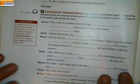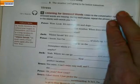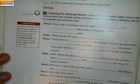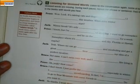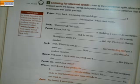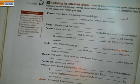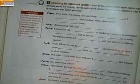This is very important for when you're tested — to choose the word from what you hear. So now, if you have the text, you can be filling it in; if you don't, you can follow along and check. Let's do the first part of the cloze. Peter: 'Wow, it's raining cats and dogs again. I hate this weather. When does winter break start?' Jack: 'Winter break? It's only October.' Peter: 'I know, but I'm sick of studying. I want to go someplace warm and lie on the beach for a week — someplace sunny and dry. Florida or Hawaii, maybe.' Jack: 'Yeah, where we can go swimming and snorkeling and get a great tan. That's my idea of a perfect vacation.'